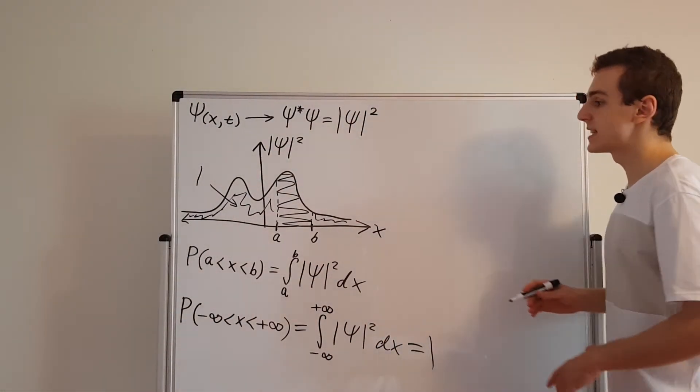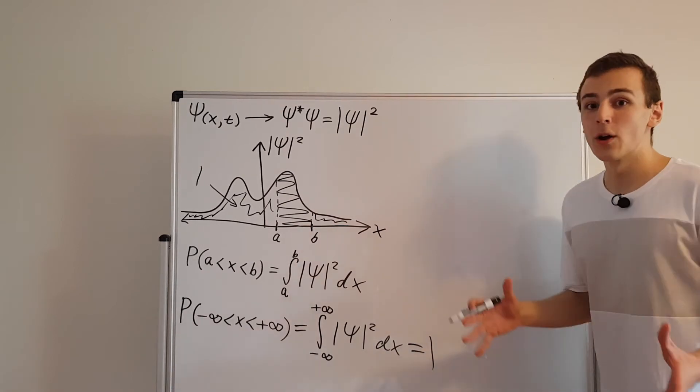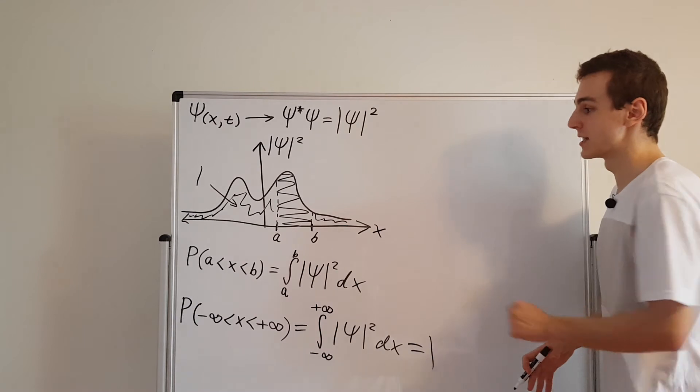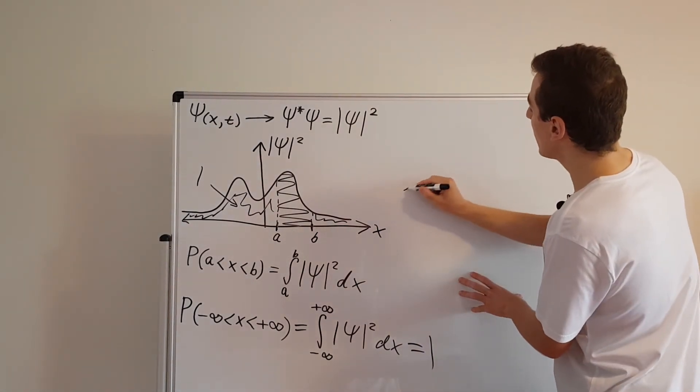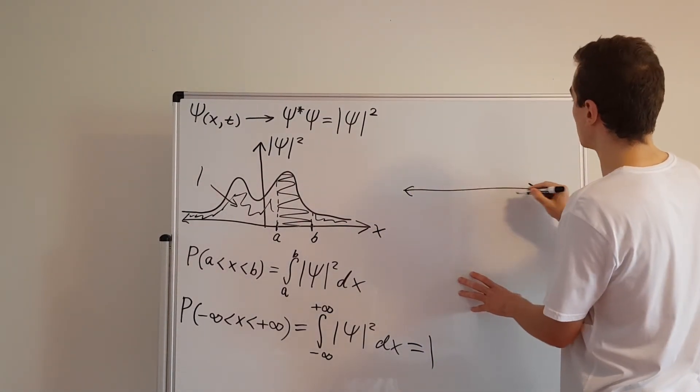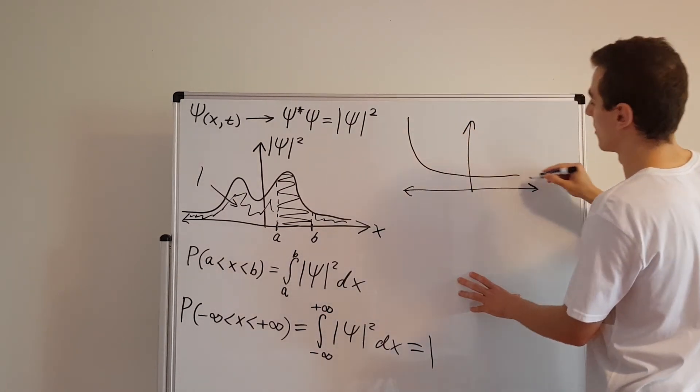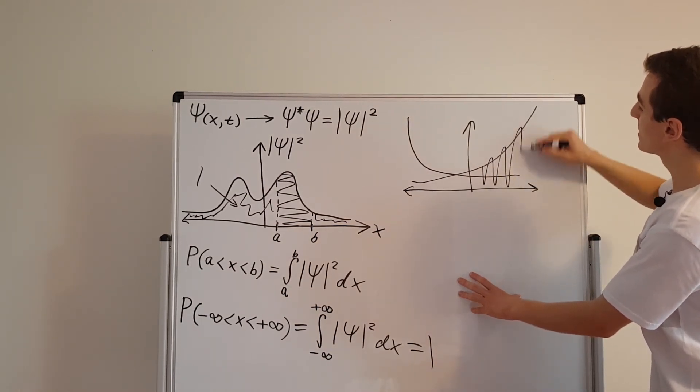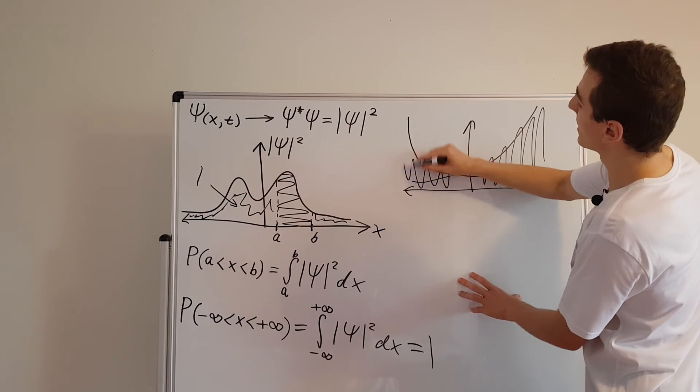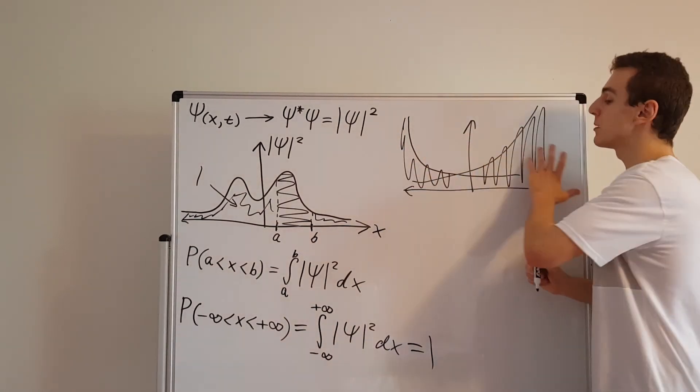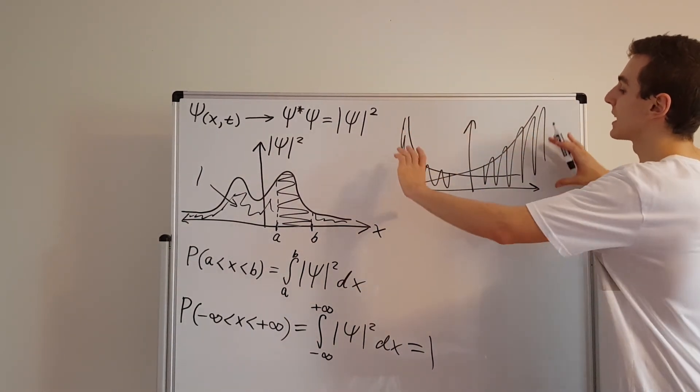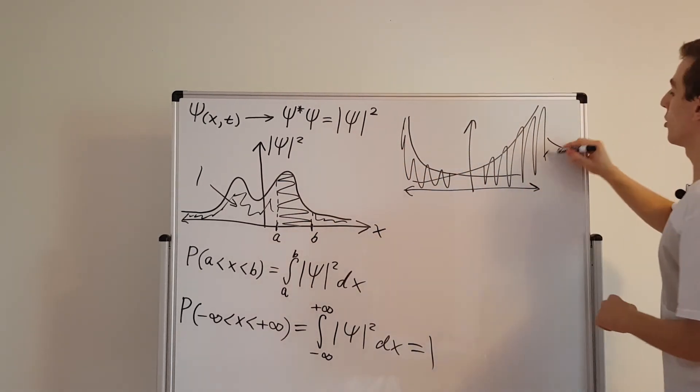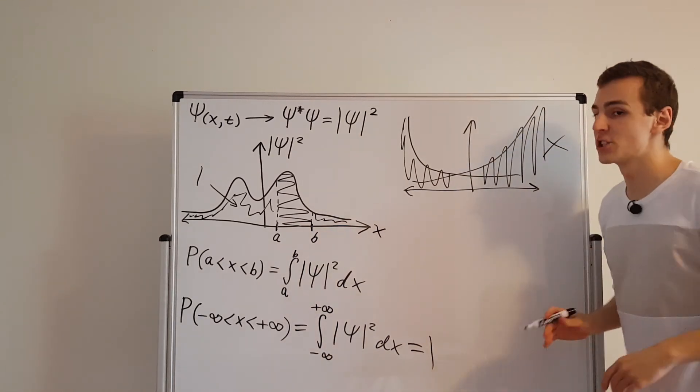What we can do is examine some possible wave functions or some possible probability densities that are going to mess up this entire system. If we have something that looks like this or something that looks like this, something where the area under the curve keeps getting bigger and bigger as you go out to minus infinity and plus infinity, this is not going to be integrable. So you're not going to be able to get a finite value from this. This is not going to be square integrable and it's not going to be normalizable.